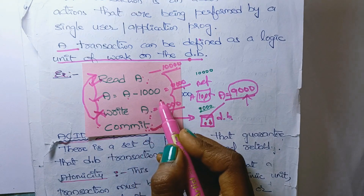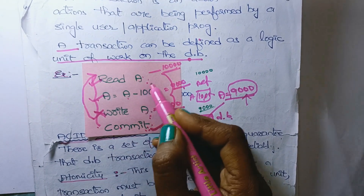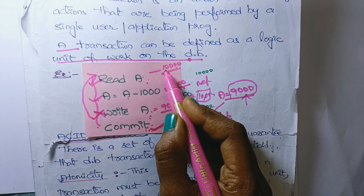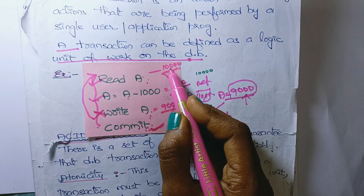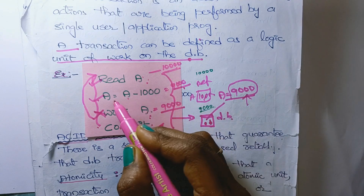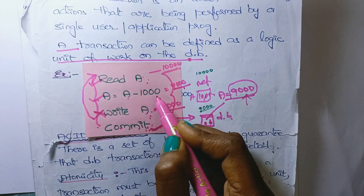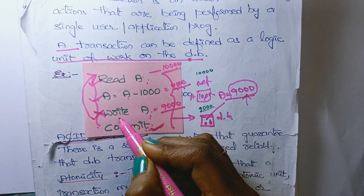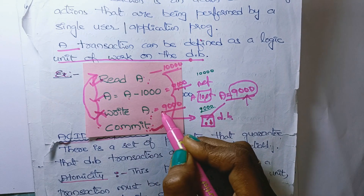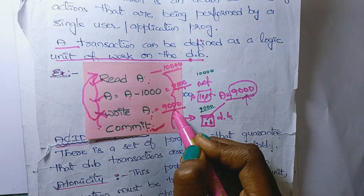Consider this example: Read A, A is equal to A minus 1000, Write A, commit. In A's account, 10,000 rupees are there. So reading A gives 10,000 rupees. A equals A minus 1000, which is 10,000 minus 1000, which is nothing but 9,000. Write A — now A's value is 9,000.